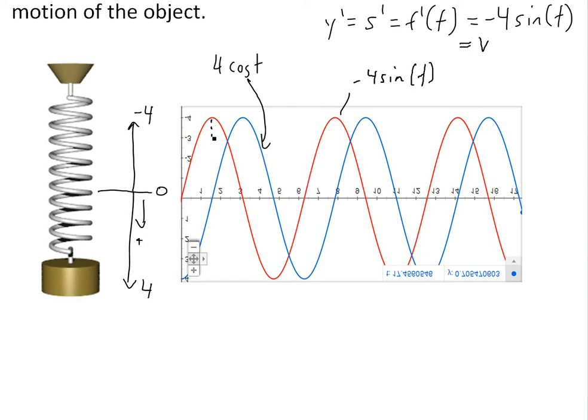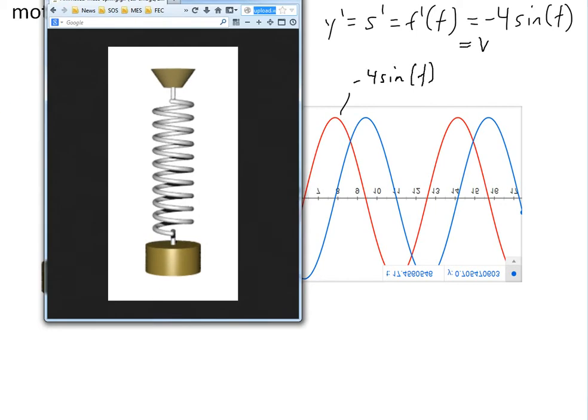The fastest it is going is whenever the object actually reaches the zero right here. This top speed corresponds to whenever the distance is zero or right when it's about to change. You can even see it from this little GIF.